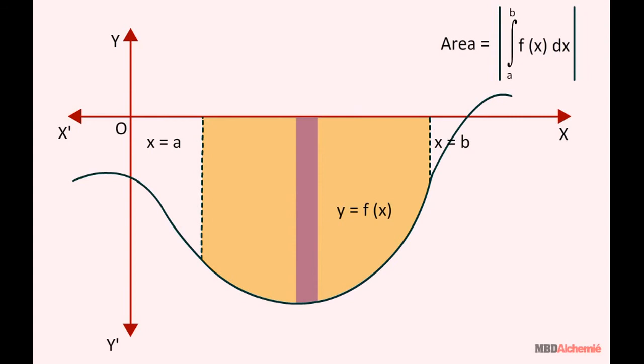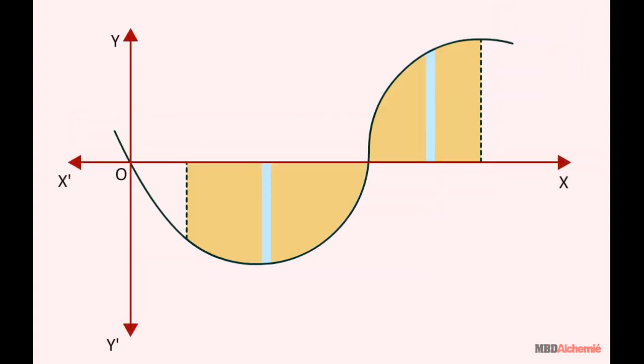As another case, if the curve has both positive and negative parts, then measure the area of the two parts separately, taking modulus of the negative part.